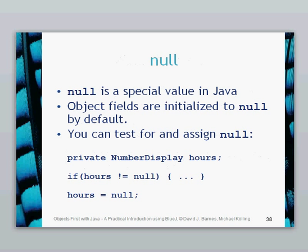Finally for this section, the null keyword is a special value used in Java. Often objects are initialized to null by default. However, you can specify other values when you create objects. You can test for null — for example, in the ClockDisplay class if you look at the fields which are created, if you want to see if the hours object of type NumberDisplay is null, then you can do: if hours is not equal to null, then do something. That's how we can test if an object has actually been created.